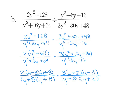Now let's cancel. I see a y minus 8 on the top and bottom, a y plus 8 on the top and bottom, a y plus 2, and another y plus 8. What's left over? On top, I have 2 times 3, which equals 6. On the denominator, since everything cancels out, it is technically 1. And 6 divided by 1 is equal to 6. So that was a very long problem just to get to an answer of 6.